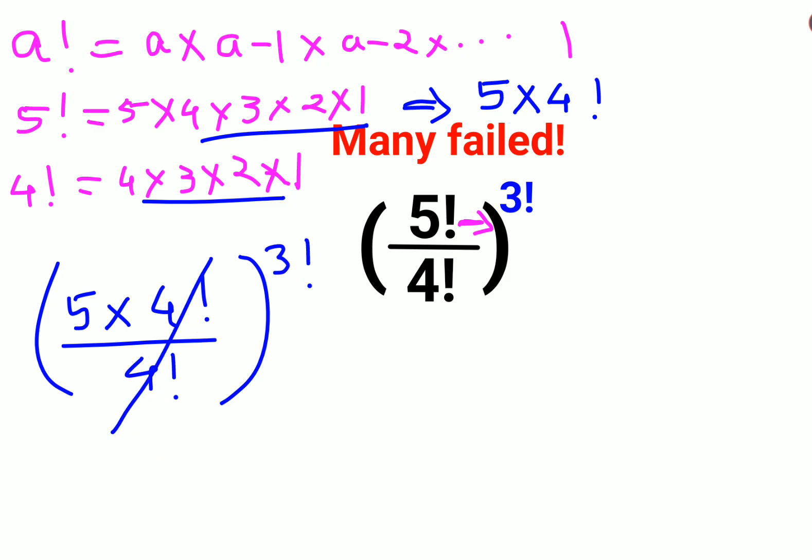So this is canceling and here we are getting 5 raised to 3. Sorry, we are getting this as 5 raised to 3 factorial.